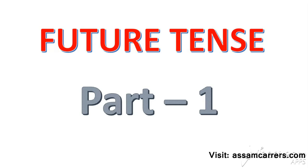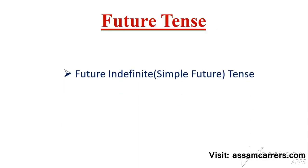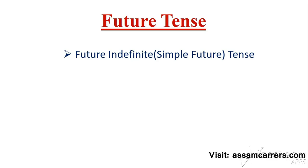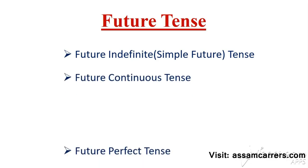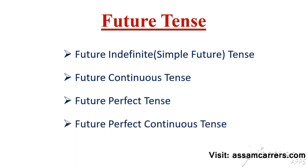What is future tense? We can divide the future tense into four types: future indefinite tense, future continuous tense, future perfect tense, and future perfect continuous tense.